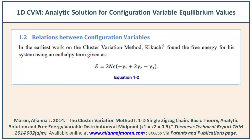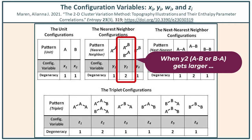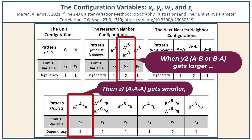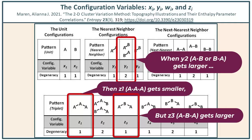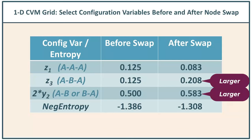So we're going to push y2 large, which means y1 and y3 will both be smaller. When y2 is larger — more AB or BA pairs — z1 for the AAA triplets (greater clustering of like-near-like) is going to be smaller. Conversely, z3, which is the ABA triplet, will be larger. Returning to our table of observed configuration variable values after the node swap: y2 is larger as a result of the swap, z3 is also larger, and z1 is smaller.